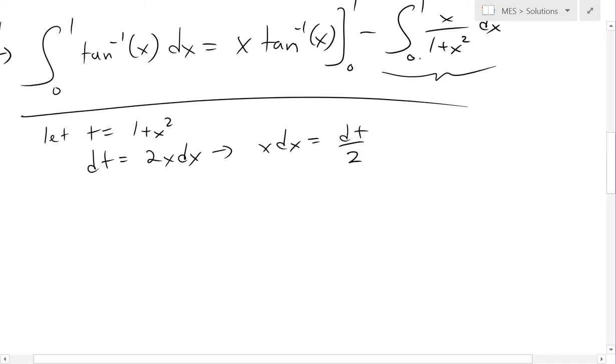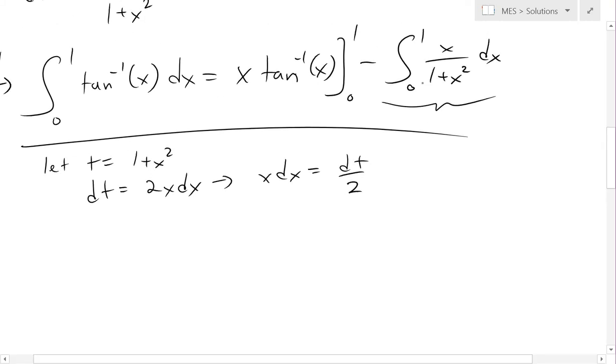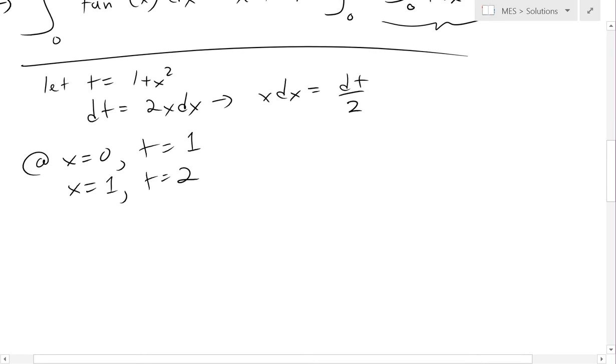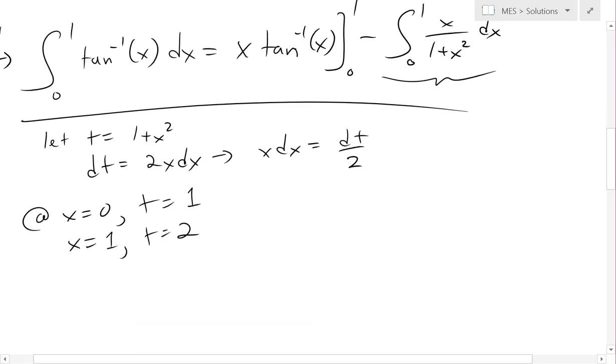And now we're changing the variable so that this 0 to 1 becomes, at x equals 0, we have t equals 1, and at x equals 1, t equals 1 plus 1 squared, which is equal to 2.